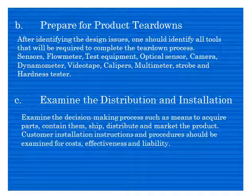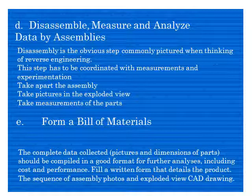The second step is preparing for the product teardown. Once you know what you are looking for, you prepare a proper plan: what equipment is needed, sensors, cameras, recording setup, notes, multimeter for measuring currents, and so on. The third step is examination of distribution and installation — you need to know how all the parts are distributed and installed. Most machines have an installation manual, so you go through it to understand the different costs and how it was made.